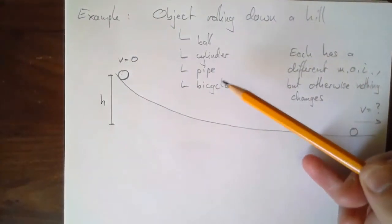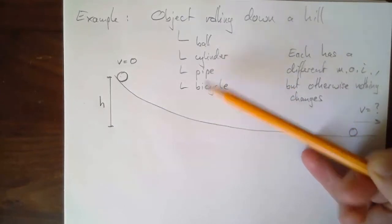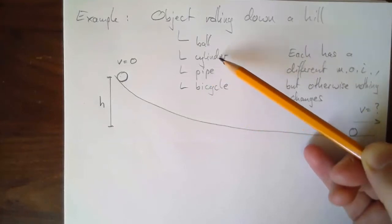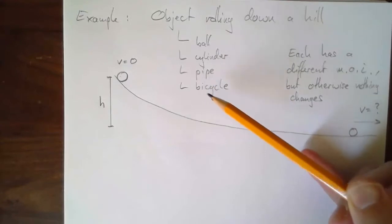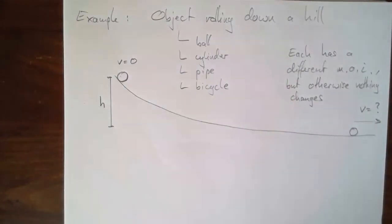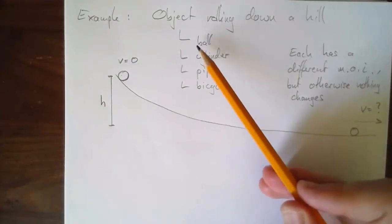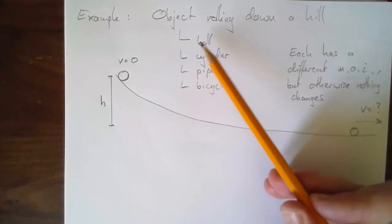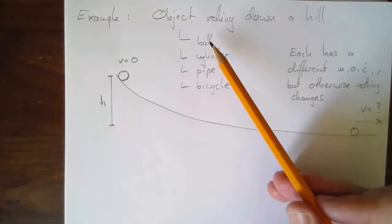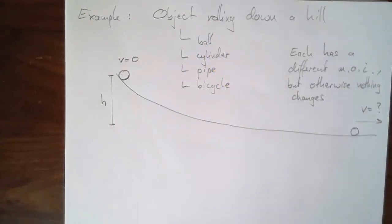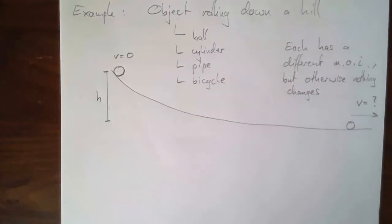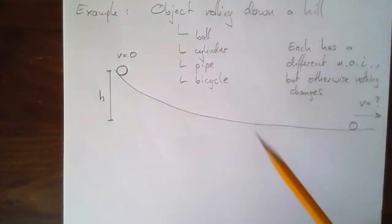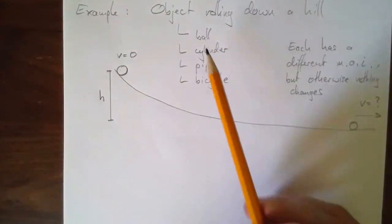Each object has a different moment of inertia (MOI). A pipe is like a ring, a cylinder is like a disc, a bicycle is like two rings. A solid ball we haven't calculated yet — it's a bit harder, but you can look it up or compute it yourself using spherical polar coordinates if you've done multivariable calculus.